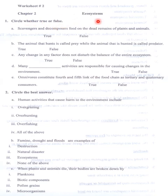So this is the ecosystem of Chapter 2. Circle whether true or false. Scavengers and decomposers feed on the dead remains of plants and animals. This is true.